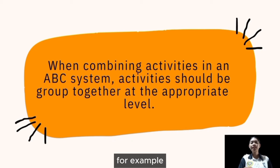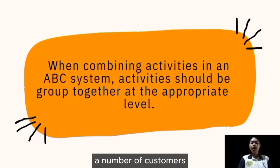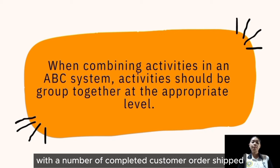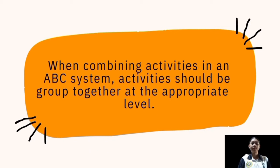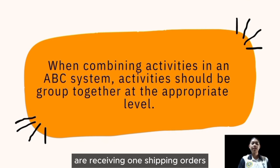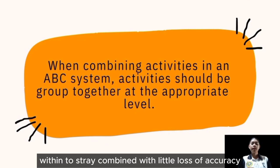For example, the number of customers' orders received is likely to be highly correlated with the number of completed customer orders shipped. So these two batch-level activities — receiving and shipping orders — can be combined with little loss of accuracy.